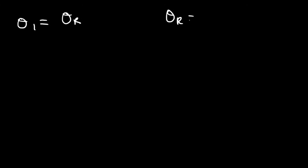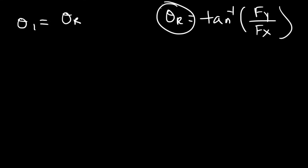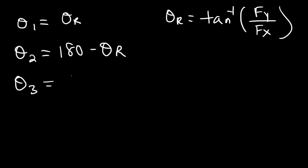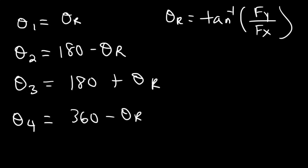To summarize the quadrant rules: if the resultant is in quadrant 1, the angle equals the reference angle. The reference angle is always the inverse tangent of the y-force divided by the x-force, using positive values to get an acute angle between 0 and 90 degrees. For quadrant 2, the angle is 180 minus the reference angle. For quadrant 3, it's 180 plus the reference angle. For quadrant 4, it's 360 minus the reference angle.